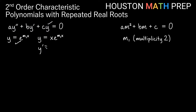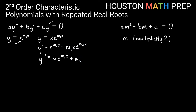Using the product rule, y' = e^(m1·x) + m1·x·e^(m1·x). For the second derivative, the first term gives m1·e^(m1·x), and applying the product rule to the second term gives m1·e^(m1·x) + m1²·x·e^(m1·x). Combining, y'' = 2m1·e^(m1·x) + m1²·x·e^(m1·x).